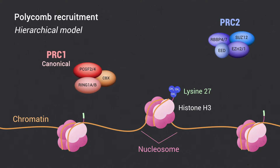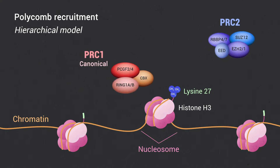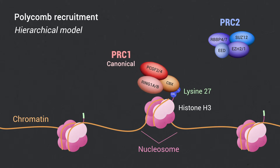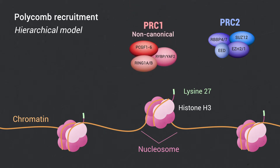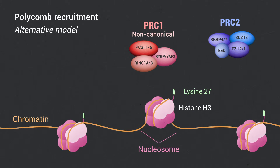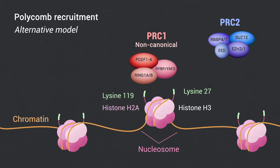which is subsequently used as a docking site to recruit the canonical PRC1 complex through the chromodomain of its CBX subunit. The absence of CBX proteins with non-canonical PRC1 implies the existence of alternative mechanisms, in which non-canonical PRC1 is first